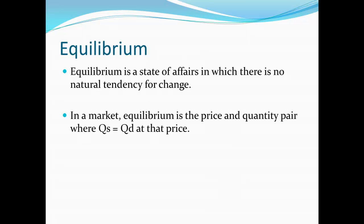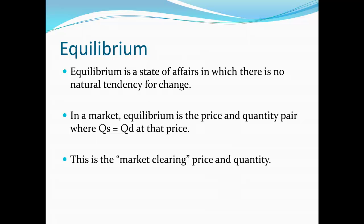In a market, equilibrium is a price and quantity pair — a state of affairs where quantity supplied is equal to quantity demanded at that particular price. We could also call this the market clearing price and quantity, for reasons that will become clear later on.